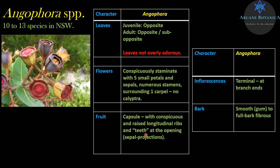Remember the fruit's a capsule — you can call it a gumnut but it's a capsule. It's got conspicuous longitudinal ribs which terminate in the sepal and petal teeth. Normally you can count 5 to 10 projections around it. The name Angophora means, in ancient Greek, something like vessel-bearing or goblet-bearing — it looks like an ancient Greek wine goblet and it does a very good job of that. So Angophora means goblet-bearing, vessel-bearing. Some beautiful fruits.